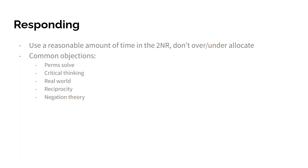Common objections to conditionality: first, permutations solve. The affirmative is able to make permutations to essentially any condo plan — perm to the condo plan, perm do both, etc. Permutations are always viable, really quick to make, and can take out advocacies if they go conceded. They also create their own independent worlds where both the affirmative and negative are implemented, which arguably worsens the abuse — you can make that argument.